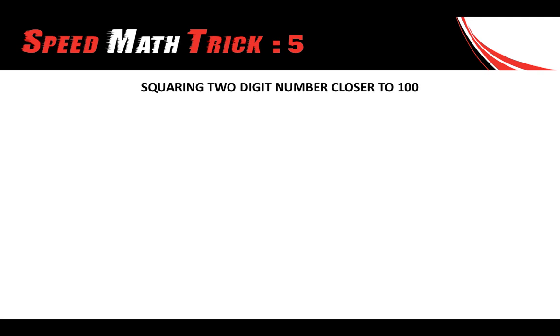In this video my friends we are going to learn how to square two digit numbers which are closer to 100. So what is the ideal range? Numbers starting from 91 to 110. As you've learned from my previous videos I had been multiplying numbers close to 100, so this time we are going to square numbers which are closer to 100. So base will be 100 over here.